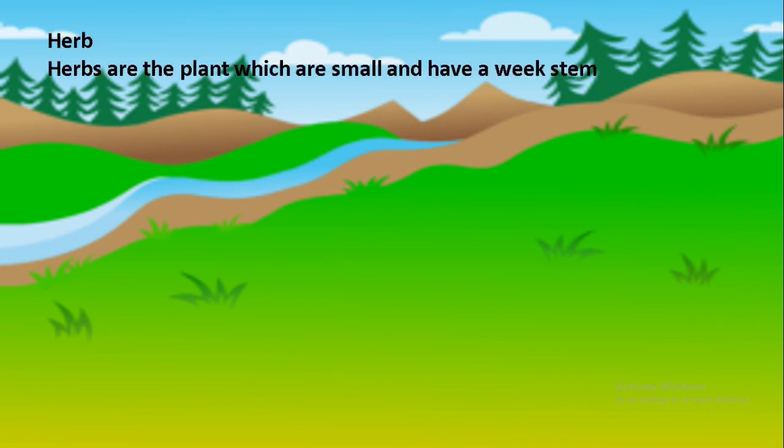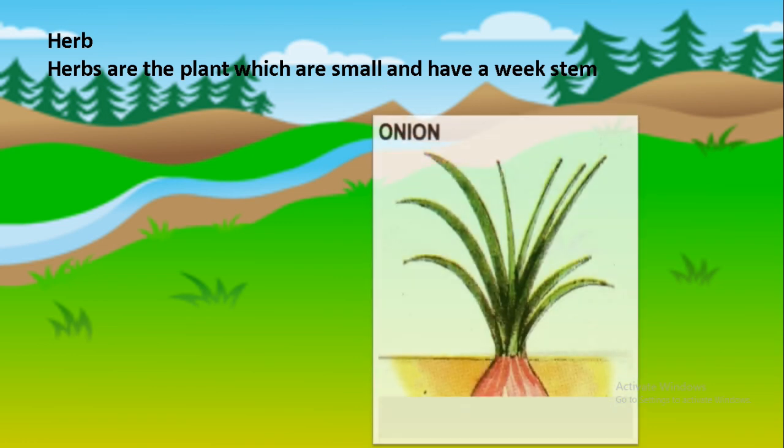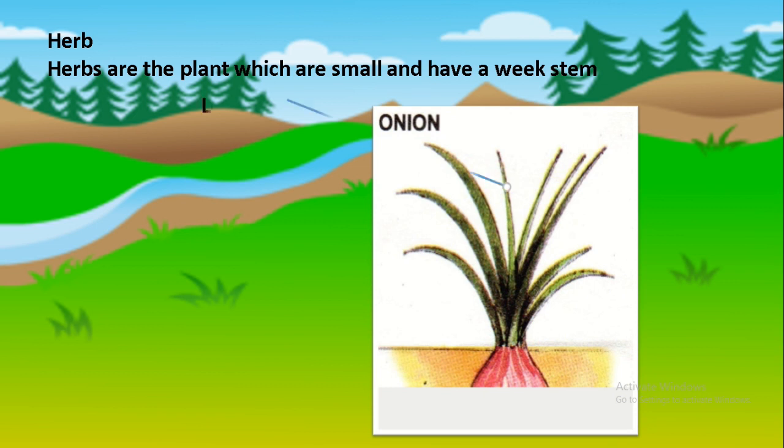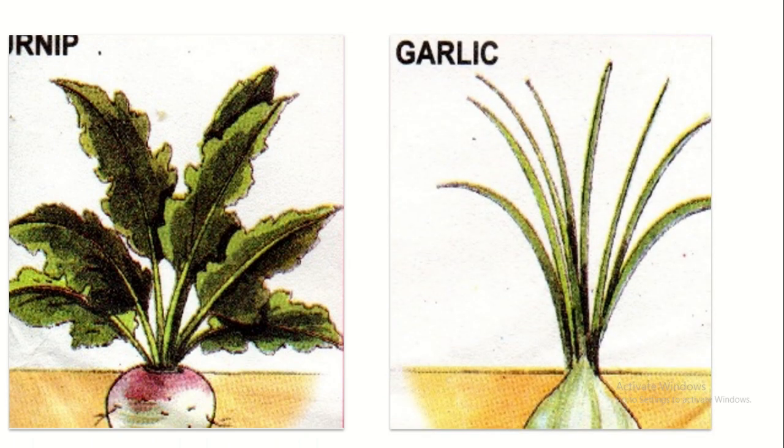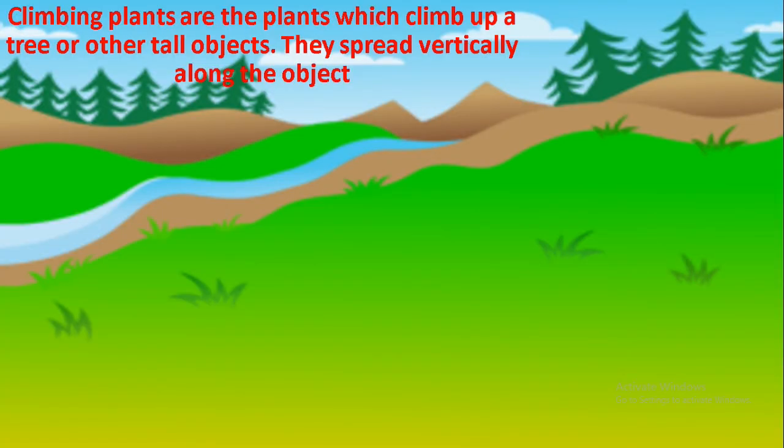Herbs are the plants which are small and have a weak stem. They have leaves. Some examples are turnip and garlic.